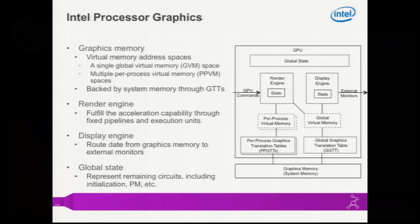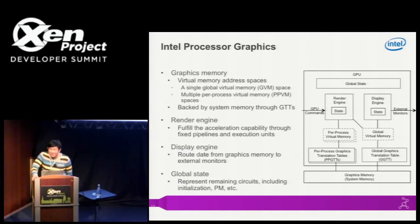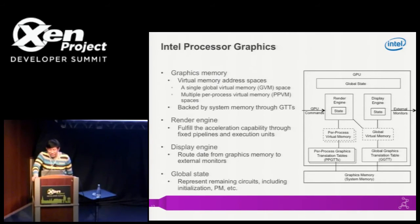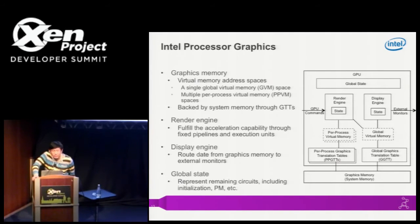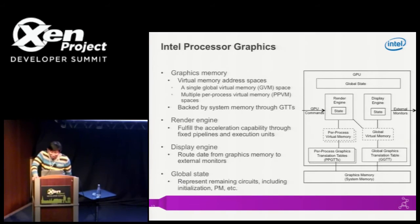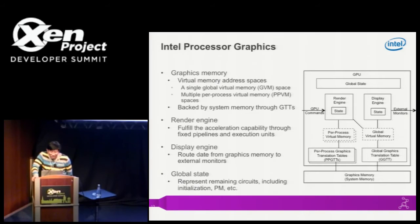Now let me talk about Intel processor graphics. This is not a traditional diagram showing all the 3D pipelines and media decode pipelines — this is a simplified diagram from a resource point of view. We show this because, as I said, we try to divide the resources into performance-critical ones and others. First I give you an overview of the resources, then on the next slide I will show you how we decide which resources are passed through and which require mediation.